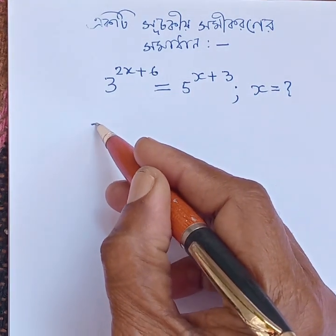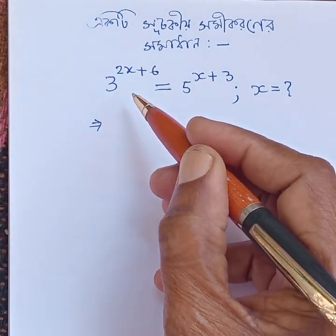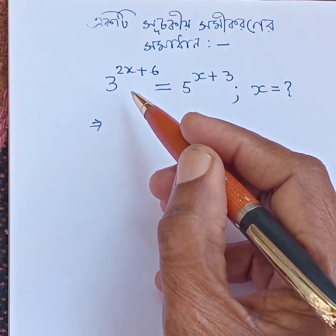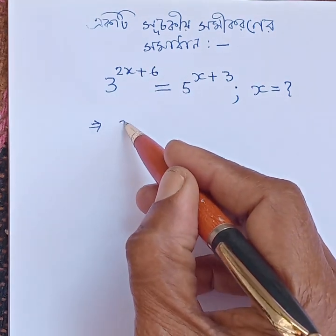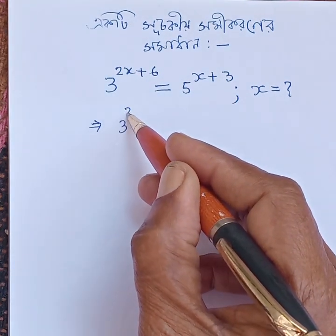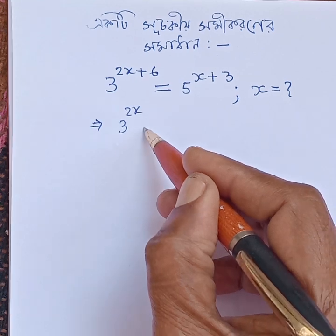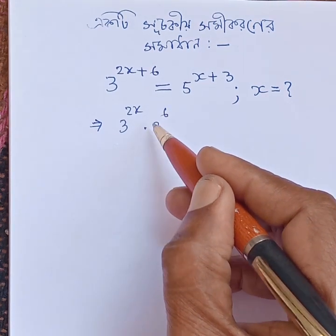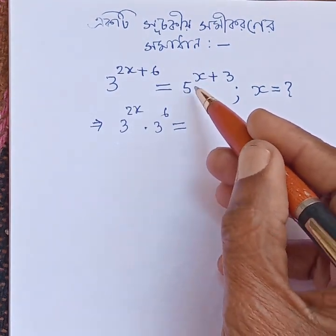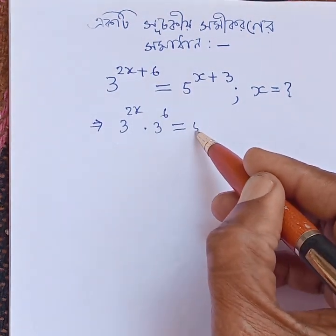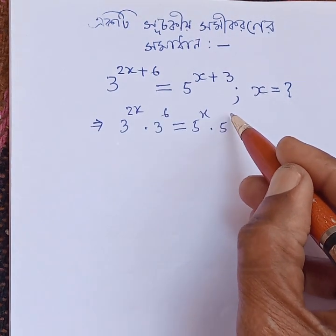This implies, according to laws of indices, this will be 3 to the power of 2x into 3 to the power of 6 is equal to 5 to the power of x into 5 to the power of 3.